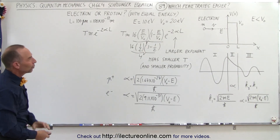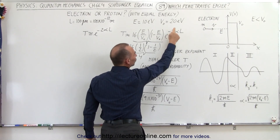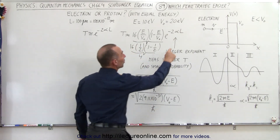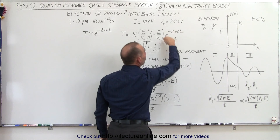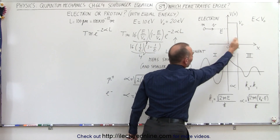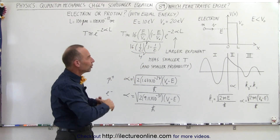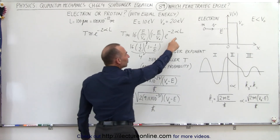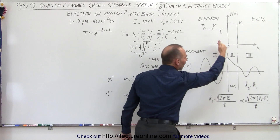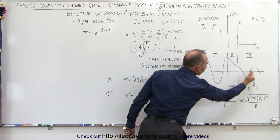Next we need to look at the exponent. Since it's a negative exponent, that's the same as 1 over e to the positive exponent, which means if this exponent is large, this becomes a very small quantity. L is the distance or width of the barrier, so that's a fixed number for a particular example. The only thing that can change is alpha, the exponential decay constant that describes how the probability declines as the barrier gets wider.